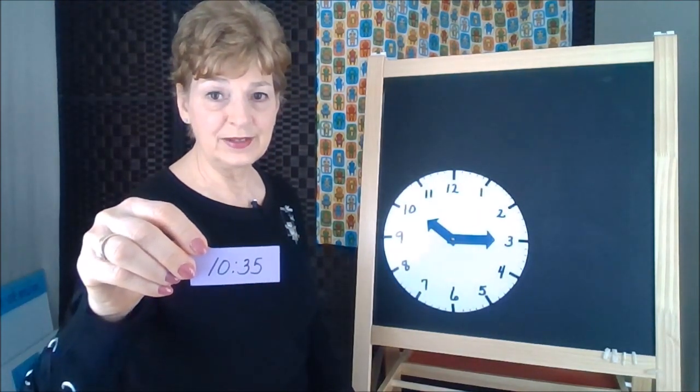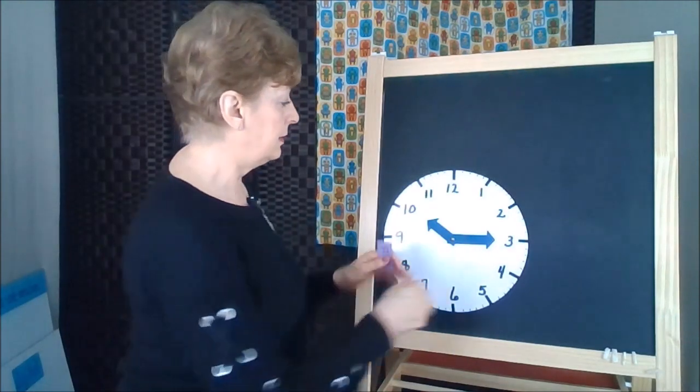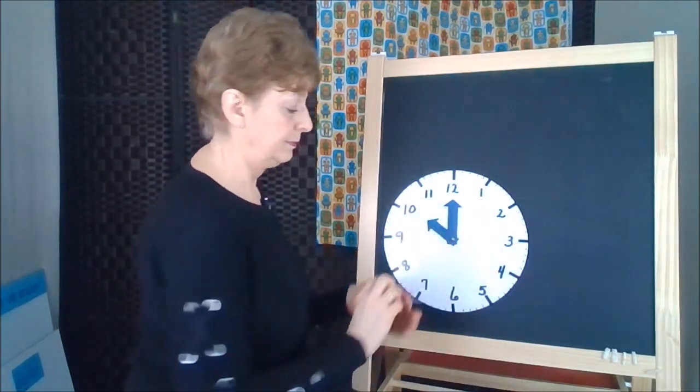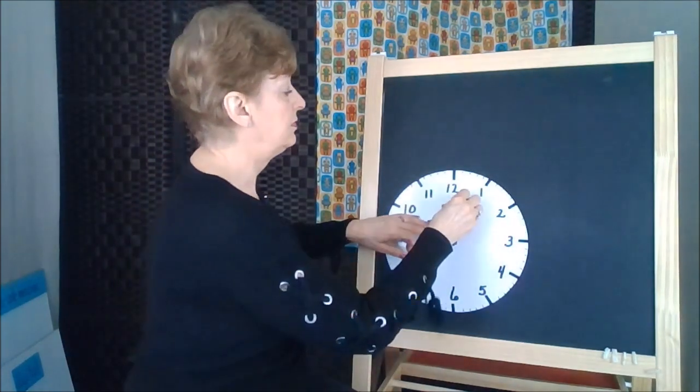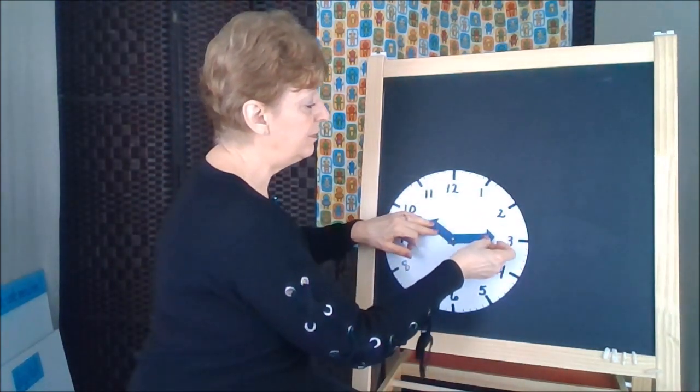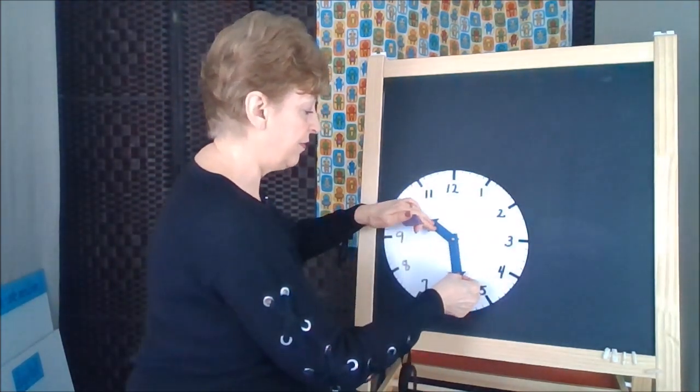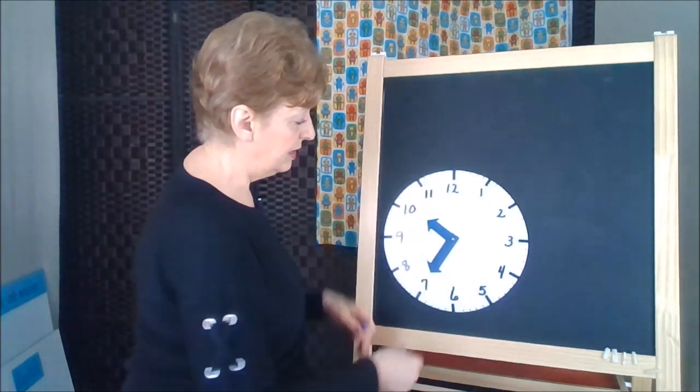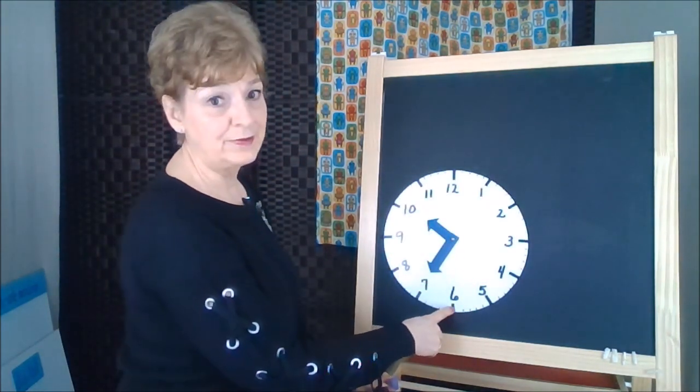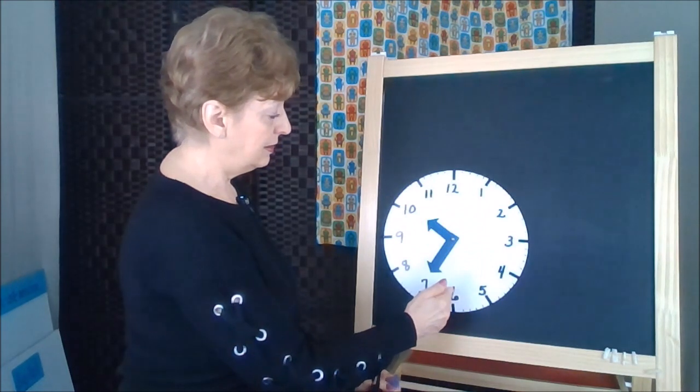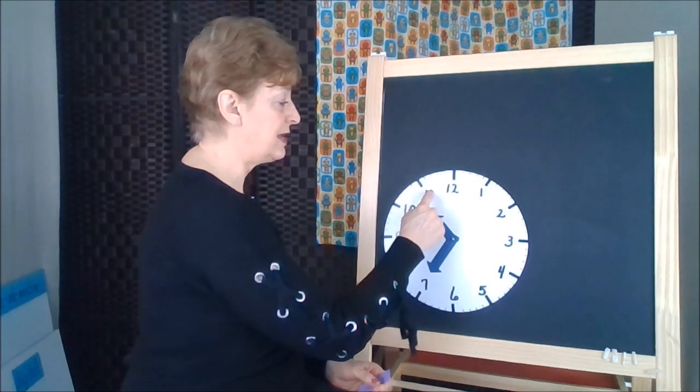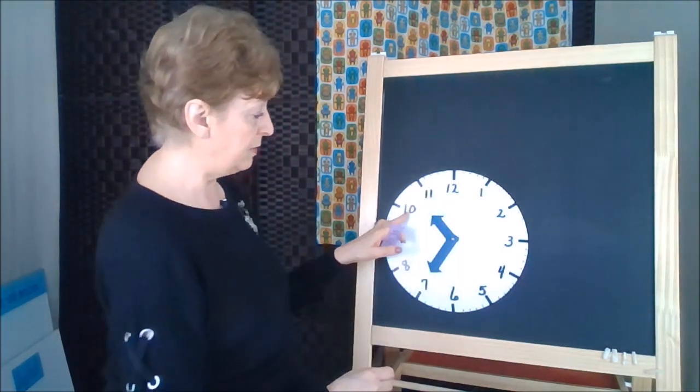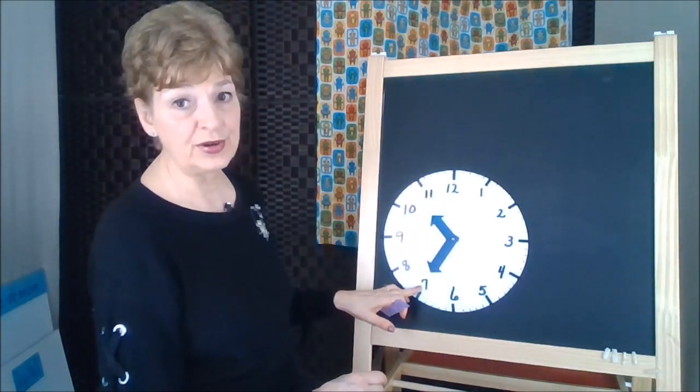Here's 10, 35. Let's make 10 o'clock. Now the 35. 5, 10, 15, 20, 25, 30, 35. This did go past the halfway part of the clock. So we're going to have to move our hand into the middle between the 10 and the 11. This would be 10, 35.